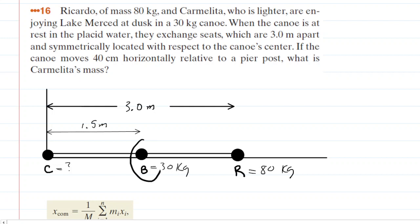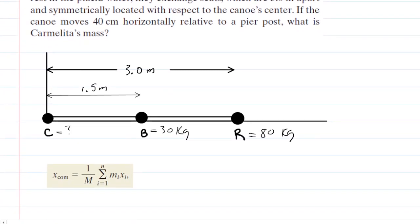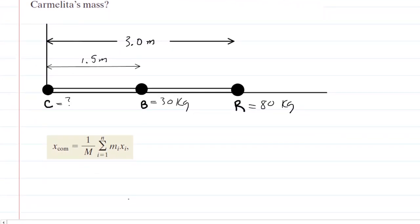Now, notice that we have the mass of the boat located at its geometric center, and that distance would be basically just half of the length of the boat. So that distance to the center of mass of the boat is one and a half meters. And so now what we need to do is find the x-coordinate of the center of mass of this three-particle system.